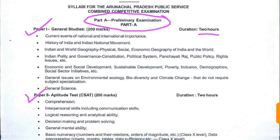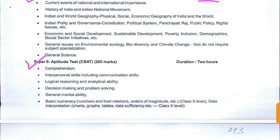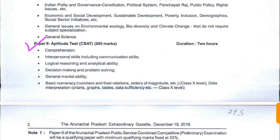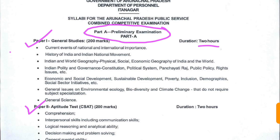Now, Paper 1 General Studies consists of: current events of national and international importance; history of India and the Indian national movement; Indian and world geography — physical, social, and economic geography of India and the world; Indian polity and governance — constitution, political system, society, public policy, rights issues, etc.; economic and social development — sustainable development, poverty, inclusion, demographics, social sector initiatives; general issues on environment, ecology, biodiversity, and climate change that do not require subject specialization; and general science.